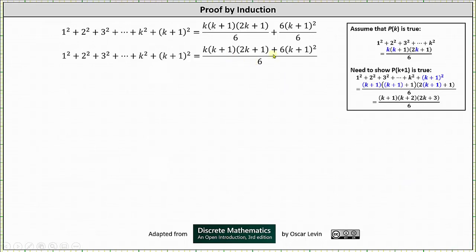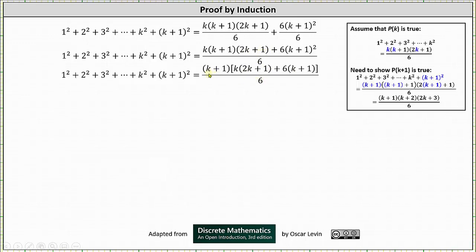Now that we've added the two fractions on the right side of the equation, notice how the two products in the numerator have a common factor of (k+1). Let's factor out (k+1) from the numerator on the right side. This gives us (k+1) times the sum of k(2k+1) and 6(k+1).